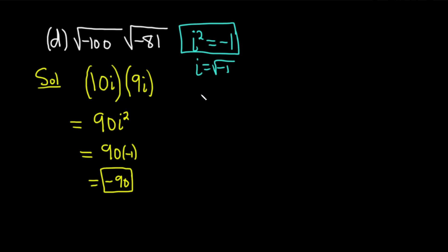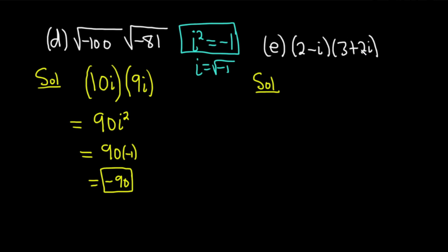Let's do some harder examples. Part e: multiply (2 minus i) times (3 plus 2i). We distribute using FOIL. I take the 2 and multiply it by the two terms in the second factor: 2 times 3 is 6, and 2 times 2i is 4i.